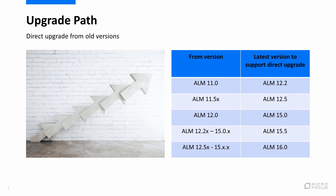When looking at the upgrade path and how you can move from your current version to the latest one, we support a direct upgrade path from ALM 12.5 or higher to the latest version. If you are using an older version, you will need to make a stop on the way. For example, if you are using ALM 12.2, you can upgrade directly to ALM 15.5 and then to ALM 16.